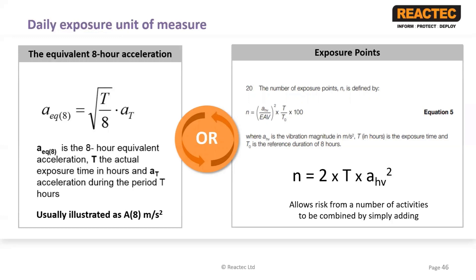In both methods you are combining the vibration magnitude during exposure with the duration of the time of that exposure. In exposure points, since the exposure action value in A8 is 2.5 and T0 is 8, the exposure points equation can be further simplified to: exposure points equals 2 times the time of exposure times the vibration magnitude of exposure squared. The benefit of the exposure points system is that when combining risk from more than one activity, you can simply add the values in points together.